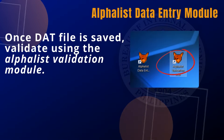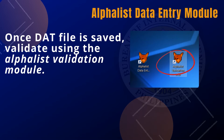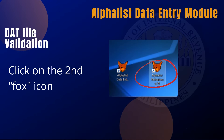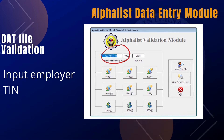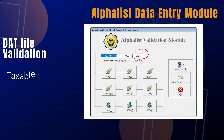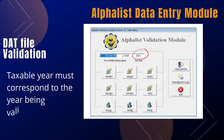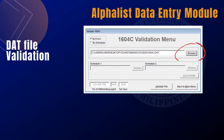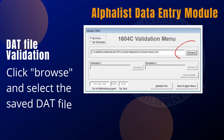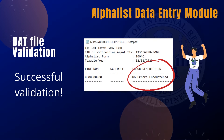Once saved, you can now validate the generated .dat file using the Alphalist Validation module. To do so, click on the second FOX icon — Alphalist Validation. You will be led to the main menu. Type in the TIN of the employer, then ensure that the taxable year corresponds to the year you are validating. Click on the form you are validating, in this case 1604-C. To locate the .dat file you previously generated and saved, click on Browse and select the saved .dat file. Now click Validate File. Your validation was successful and there are no errors encountered.